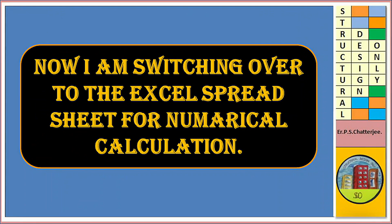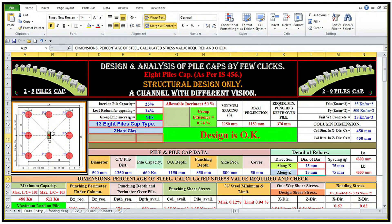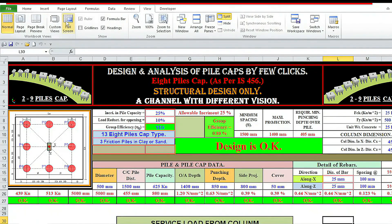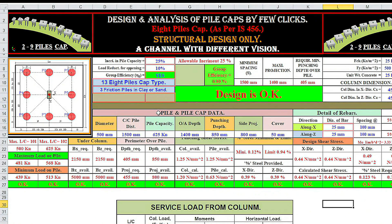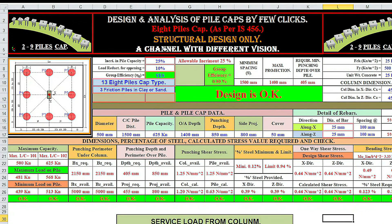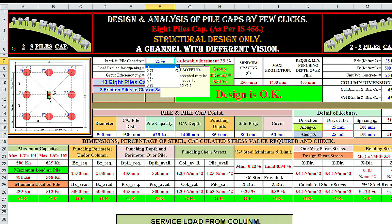Now I'm switching over to the Excel spreadsheet for numerical calculation. I'm changing all the parameters — say incremental pile capacity is zero.